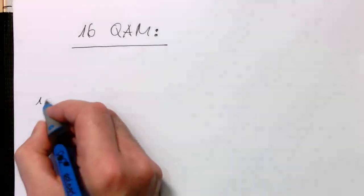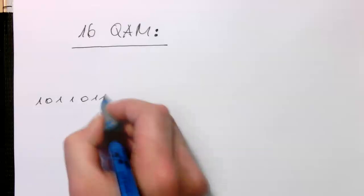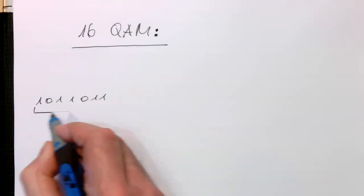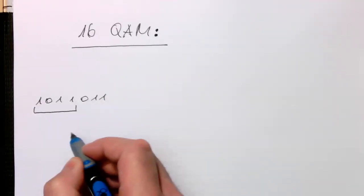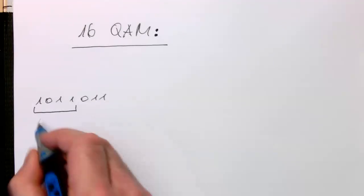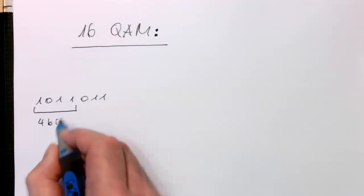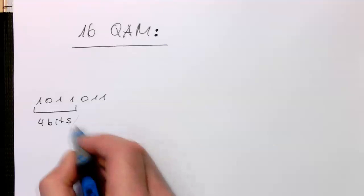so if this is our binary stream here, that we are taking 4 values, so 4 bits, 4 bits per symbol.